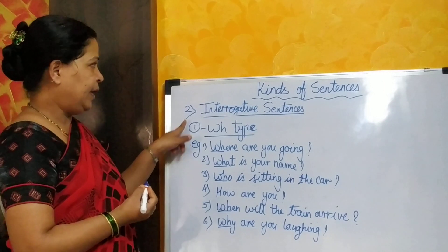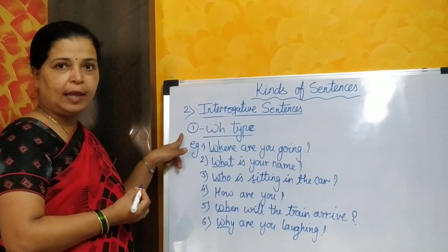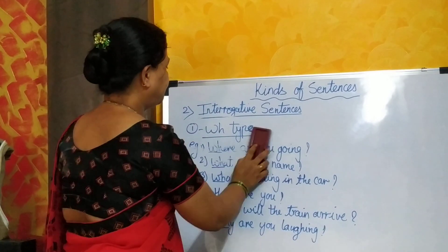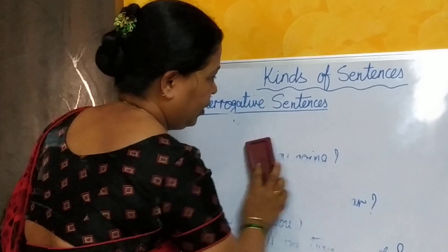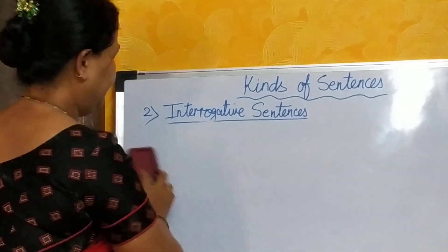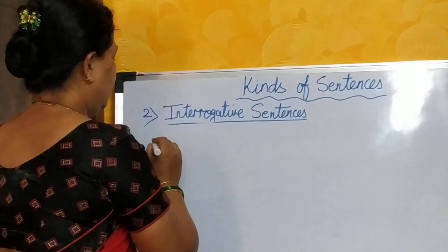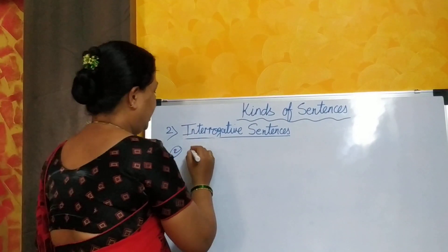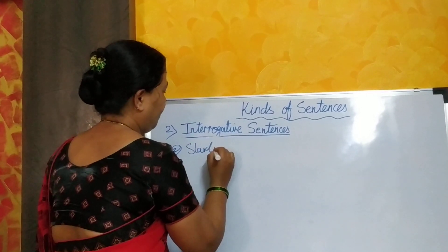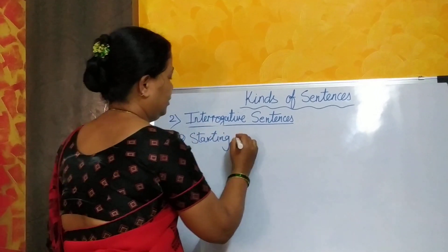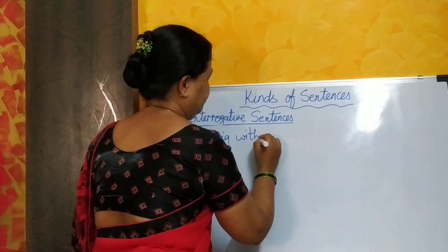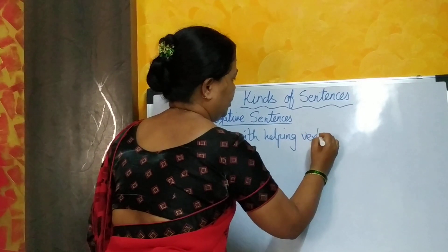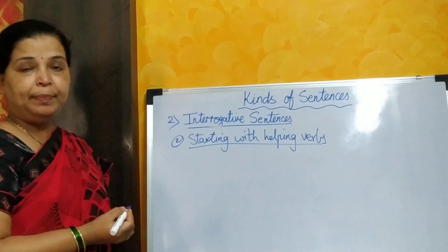Now let's see the second type of interrogative sentences. The second type begins with helping verbs — starting with helping verbs.